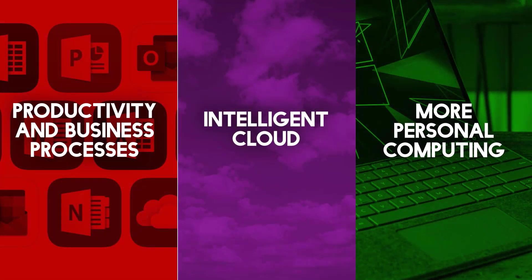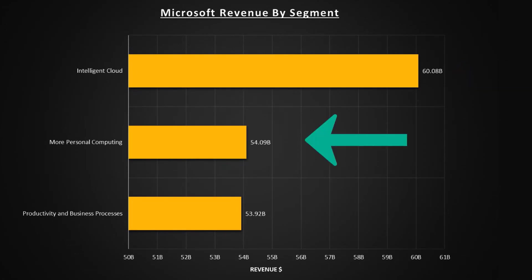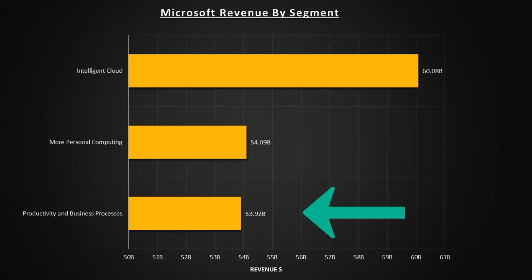So those are the segments that generate revenue for Microsoft. But what does the revenue mix look like? This may be surprising, but Microsoft's intelligent cloud segment brings in the most revenue, followed by more personal computing, then productivity and business processes. For me personally, I'd always just associated Microsoft with personal computers, office software and Xboxes. So doing my research on the company and discovering that they have a cloud segment which brings in the majority of the revenue was a real eye-opener.